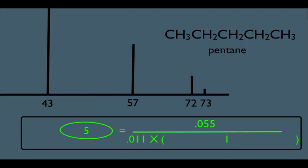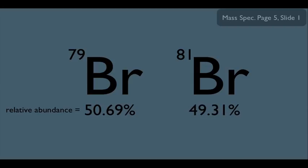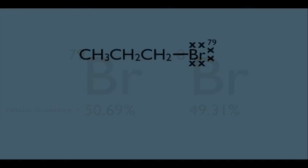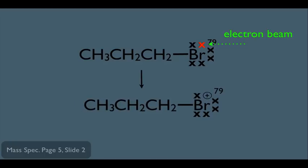This relative abundance analysis is not limited to carbon. Bromine comes in two isotopes: Br-79 and Br-81, with relative abundances of 50.69% and 49.31% respectively. These percentages are laws of nature. If we have an unknown substance containing Br, put it in the mass spec, shoot an electron beam at it, and dislodge an electron from the Br, we get a molecular ion with a positive charge — giving rise to a molecular ion peak.